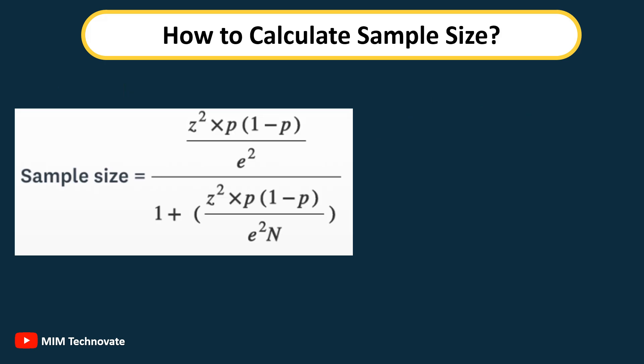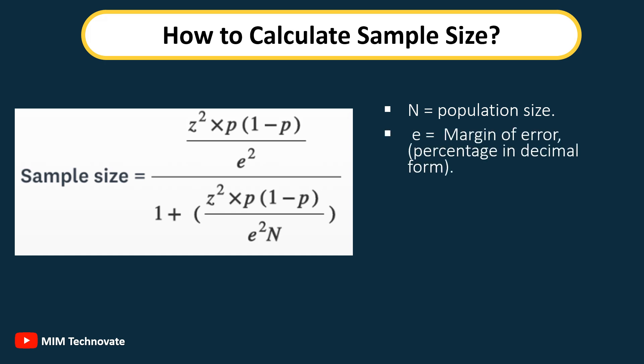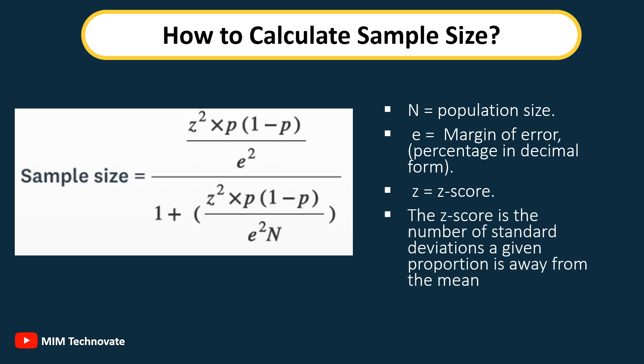How to calculate sample size: use the following formula to calculate sample size. N is the population size, E is the margin of error expressed as a percentage in decimal form, and Z is the Z-score — the number of standard deviations a given proportion is away from the mean.